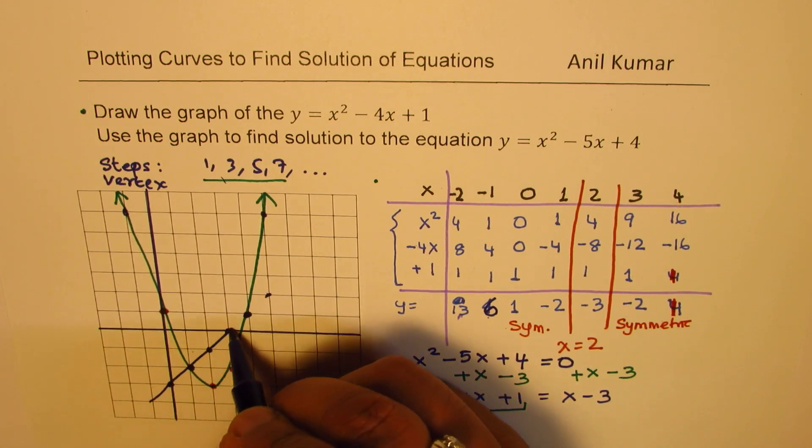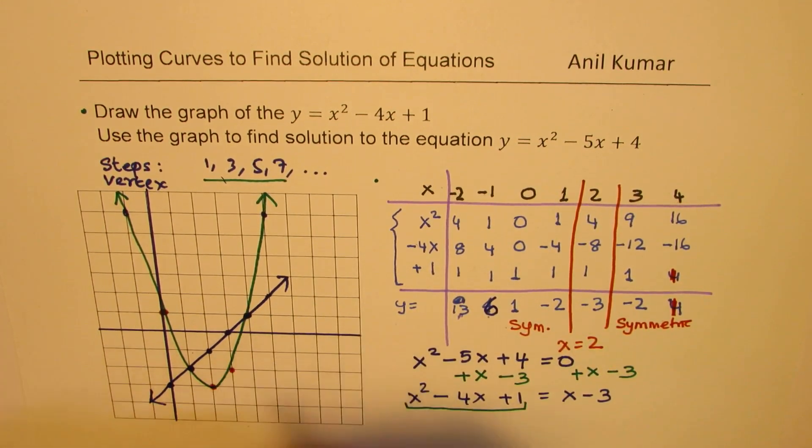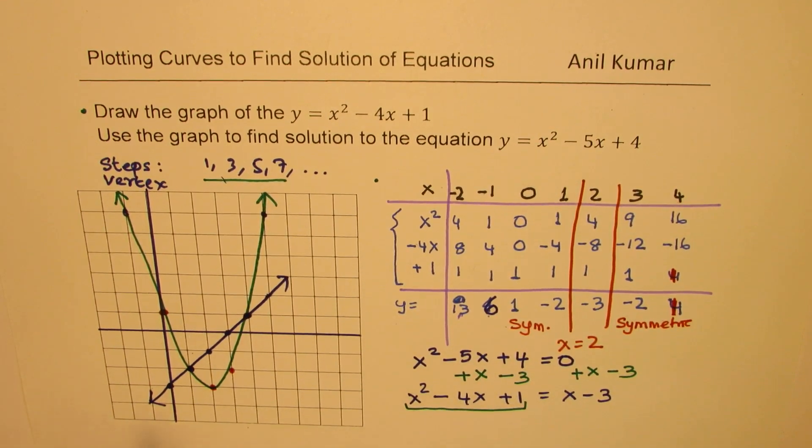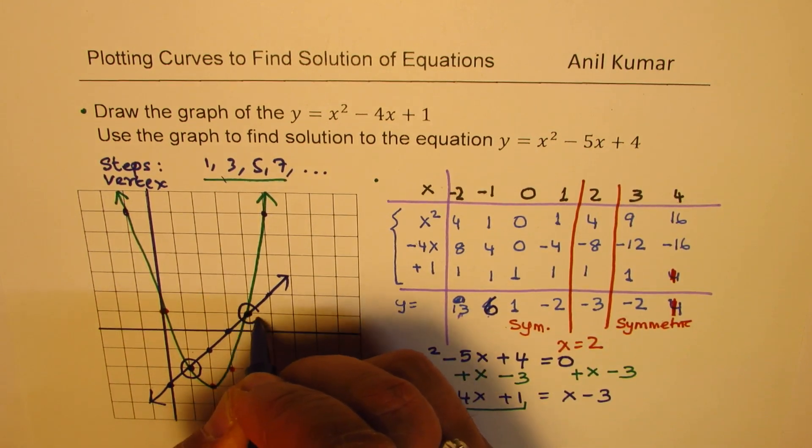So the line, you can see, goes through this parabola. And we do get intersection at two different points. So these two points are the solution of the original equation. So the solution for us is this one and that one.